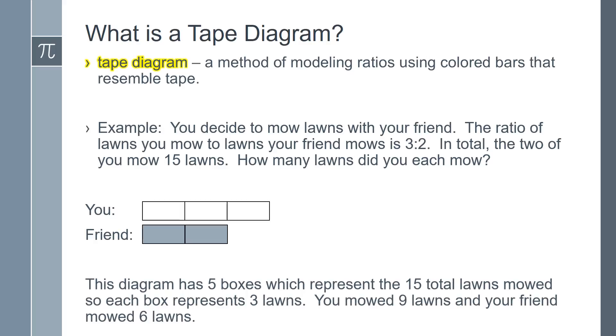This diagram has 5 boxes, which represent the 15 total lawns mowed, so each box represents 3 lawns. You mowed 9 lawns and your friend mowed 6 lawns. This is the strategy that we will use in the upcoming problems.